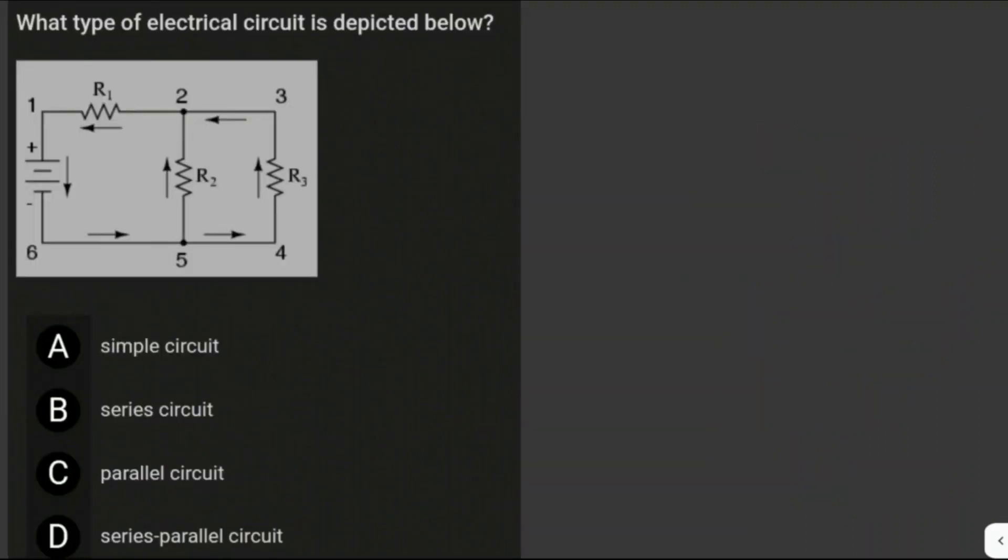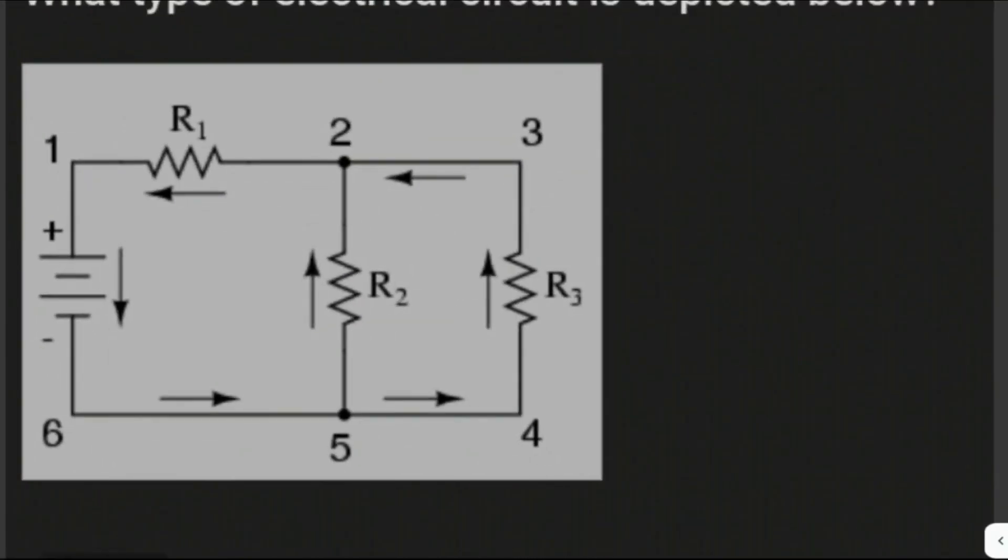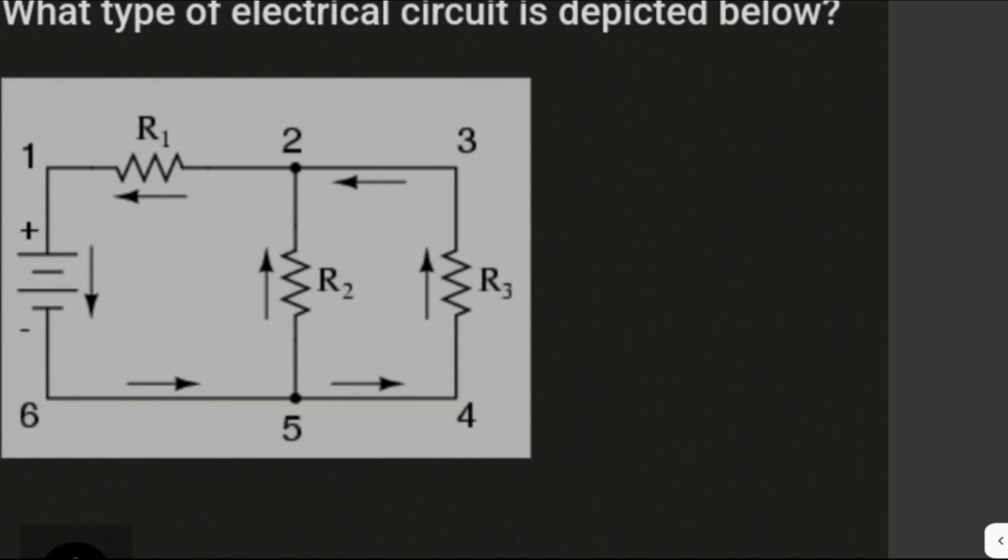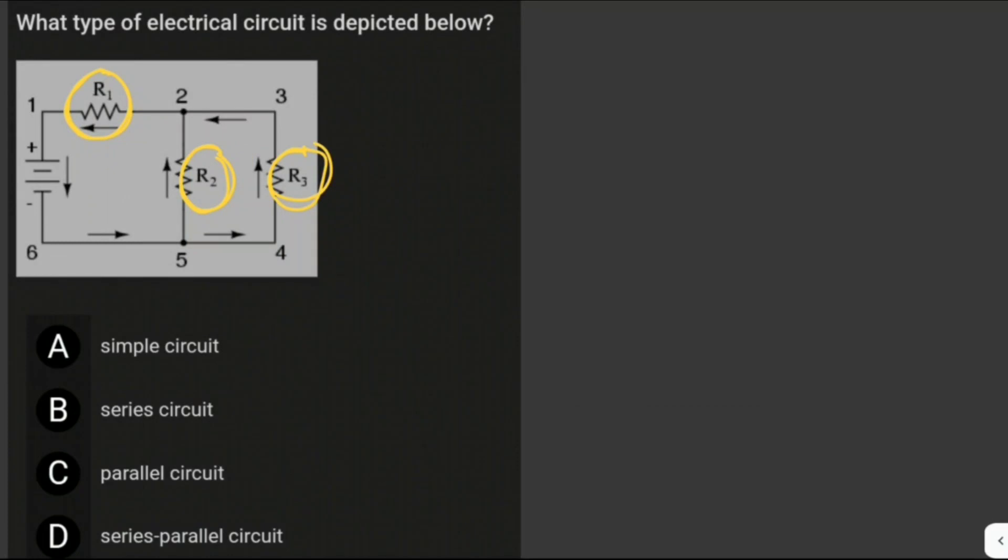What type of electrical circuit is depicted below? We're given this electrical circuit with loads: resistors one, two, and three. In a series parallel circuit, some loads are wired in series and some loads are wired in parallel. In this case, resistor one is wired in series while loads R2 and R3 are wired in parallel. Therefore, this electrical circuit is a series parallel circuit. The answer is letter D.